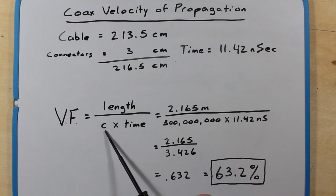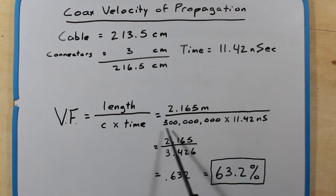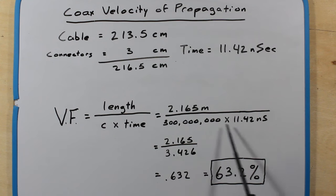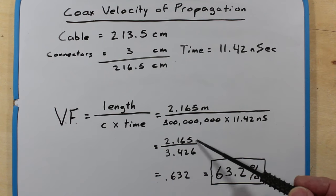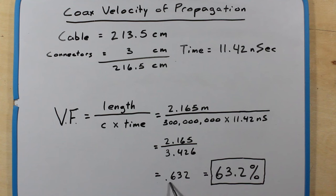Here's the length of our cable. Here's velocity of light, 300 million meters per second, and that's c that right here. And here's the time that we measured from the scope, which is the 11.42 nanoseconds. And we calculate this out and we get these two numbers here. And then we do the division. And this is our final result, 0.632, which is 63.2% for the velocity factor in that piece of cable.